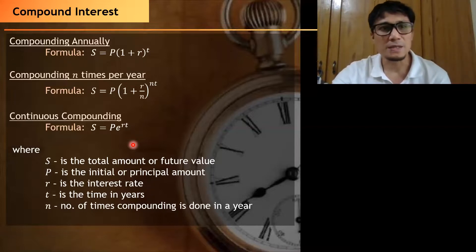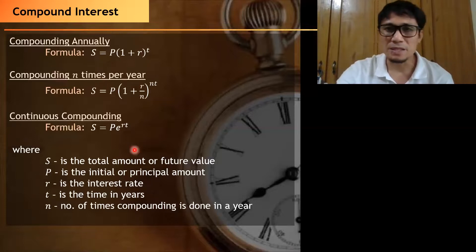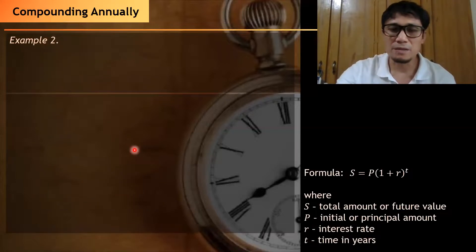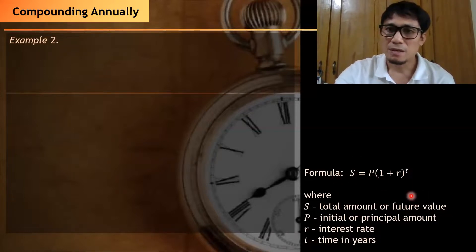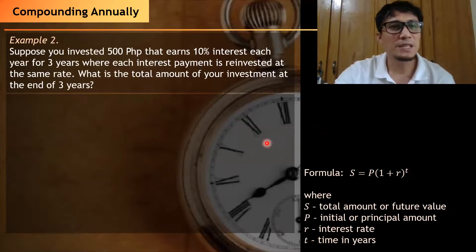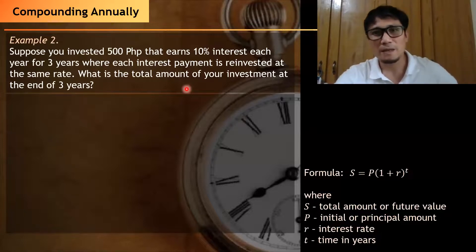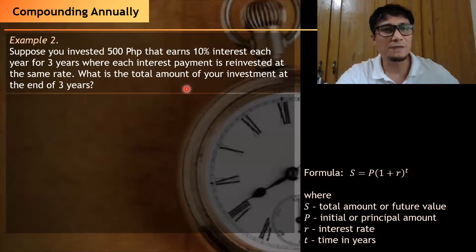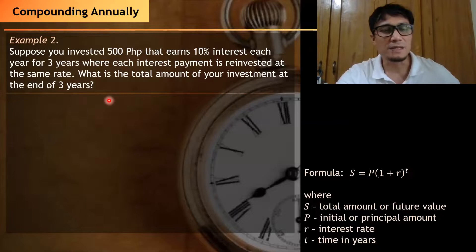Let's illustrate this. We'll start with the first case where compounding is done annually. Consider this problem: suppose you invested 500 pesos that earns 10% interest each year for three years, where its interest payment is reinvested at the same rate. What is the total amount of your investment at the end of three years?